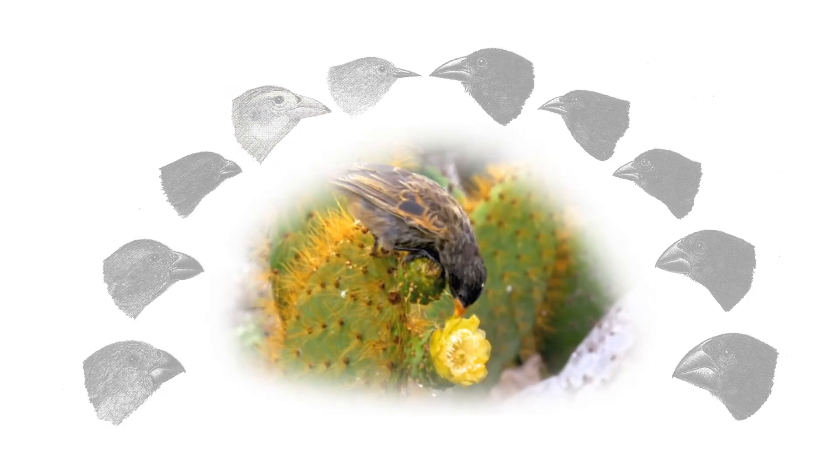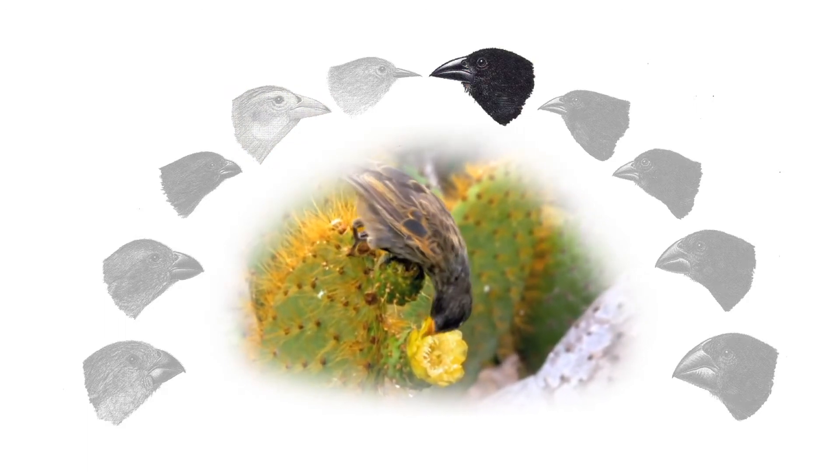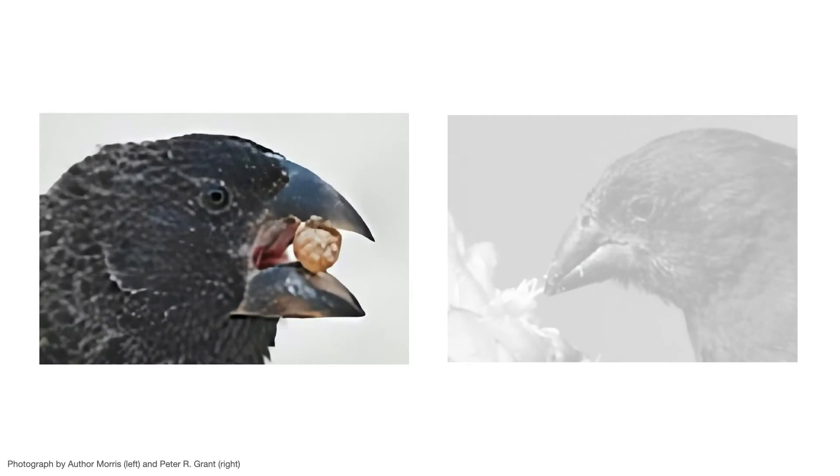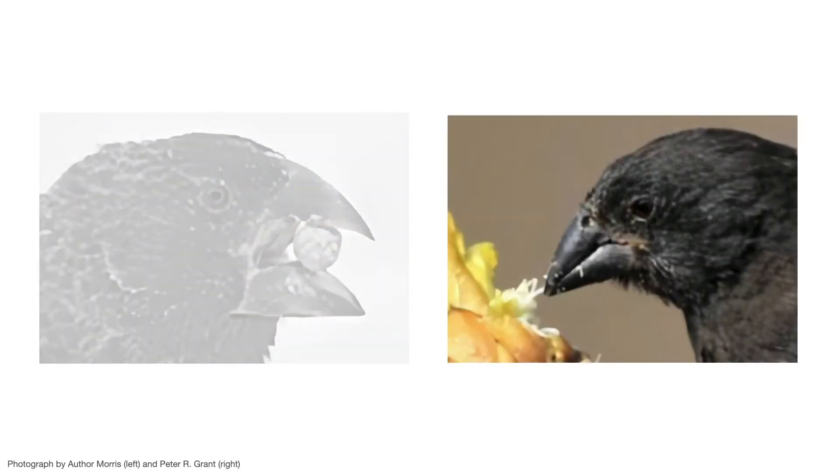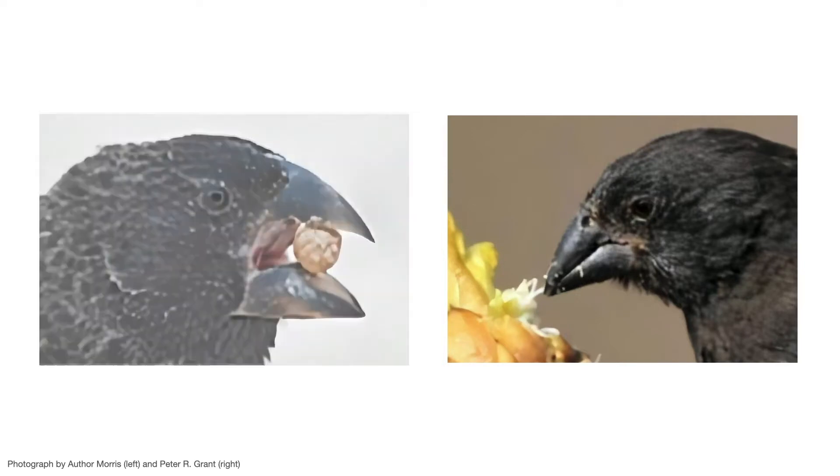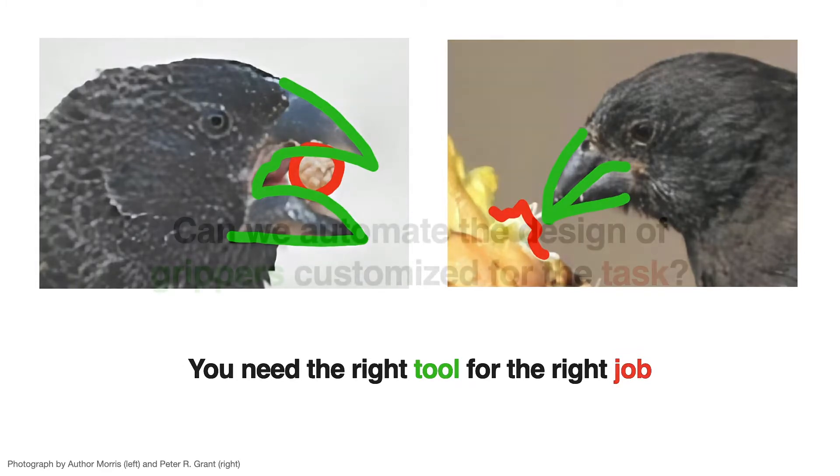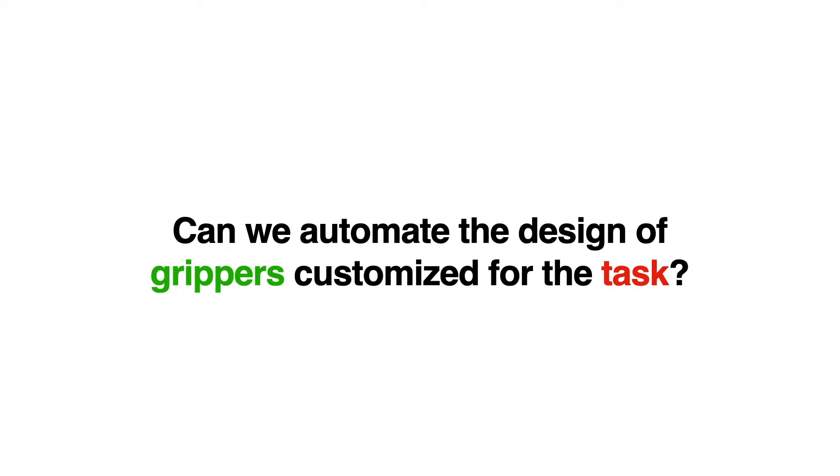In nature, animals evolve all kinds of specialized tools. Take Darwin's finches as an example. While the ground finch's wider beaks are good for cracking nuts, the cactus finch's long beaks are evolved for probing flowers. Beaks are just tools with different shapes evolved for different jobs. Can we take inspiration from nature for our robotic systems and automate the design of task-specific grippers?